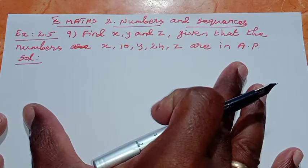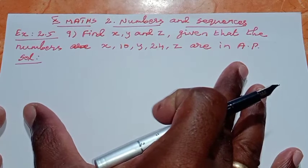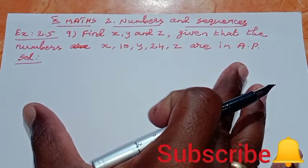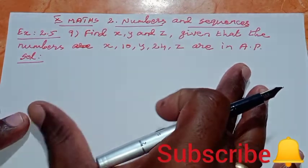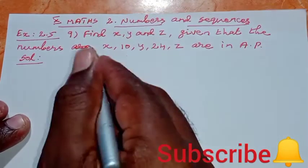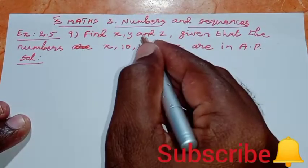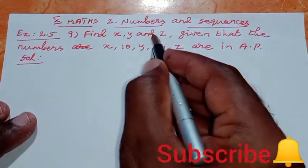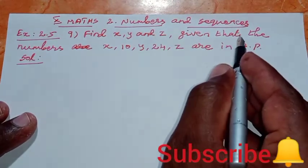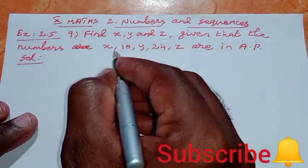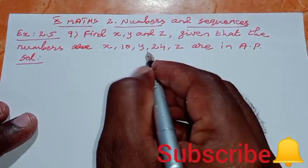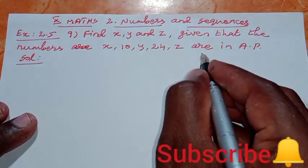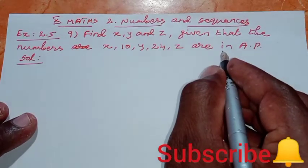Dear students, in this video we are watching 10th Maths, second chapter Numbers and Sequences, Exercise 2.5, sum number 9. See the question: find x, y, and z given that the numbers x, 10, y, 24, z are in AP.